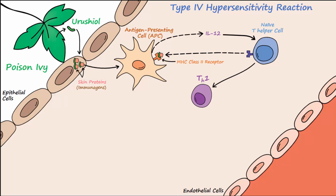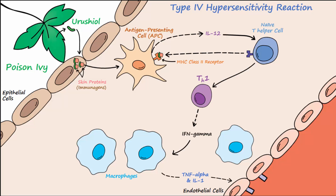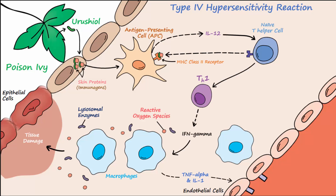The TH1 cell releases several cytokines including IFN-gamma, which activates macrophages. The activated macrophages then release IL-1 and TNF-alpha, which cause expression of receptors on endothelial cells to recruit more leukocytes to the area. Activated macrophages also perform phagocytosis and release reactive oxygen species and toxic lysosomal enzymes that cause the tissue damage that manifests after exposure to poison ivy.